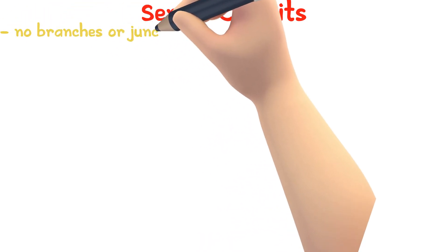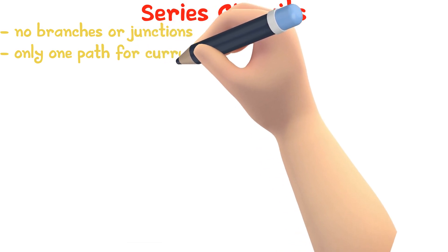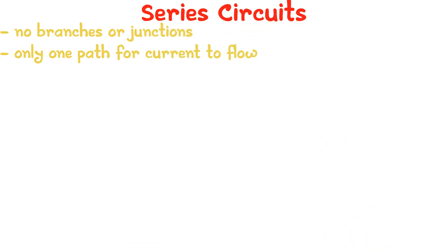There are many types of circuits. One type of circuit is where there are no branches or junctions, so there is only one path for current to flow. It is called a series circuit.